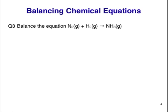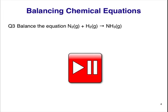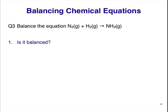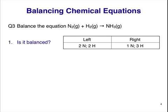Question 3. Balance the equation N2 plus H2 making NH3. Pause the video here and figure out your answer. The first step is to count the number of each kind of atom on the left and right side of the equation. On the left, we have two N and two H atoms. On the right, we have one N and three H atoms. This equation is not balanced, and we need to look at both N and H atoms.